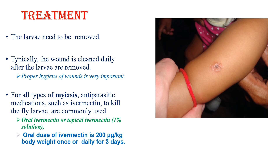When we come to the treatment, the larvae need to be removed, and typically the wound is cleaned daily after the larvae are removed. Proper hygiene of the wound is very important in taking care of myiasis. For all types of myiasis, anti-parasitic medications such as ivermectin to kill the fly larvae are commonly used. The dose of ivermectin is systemic or oral, 200 micrograms per kg, either once or daily for 3 days, based on the severity of the infection, or topical ivermectin can also be used.